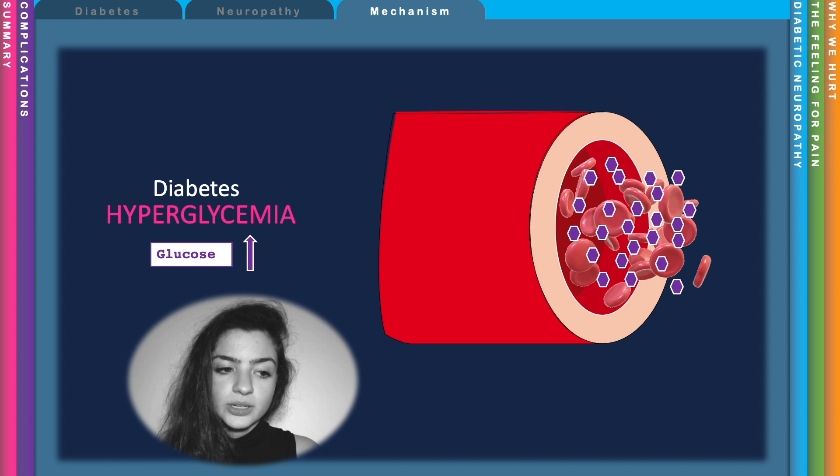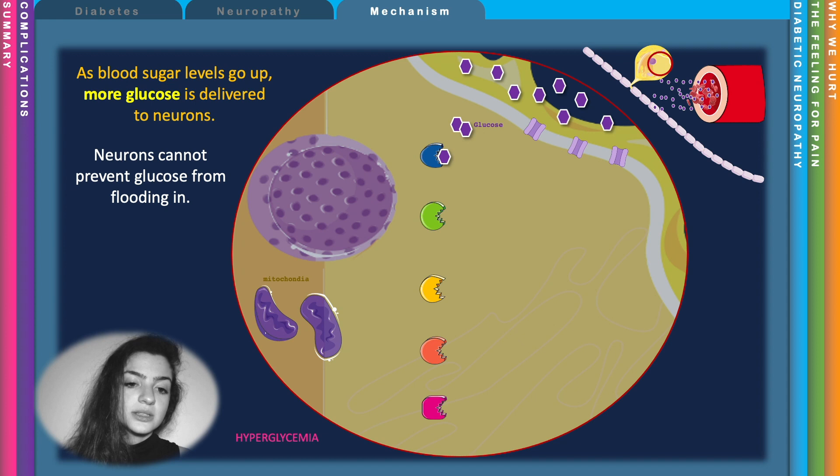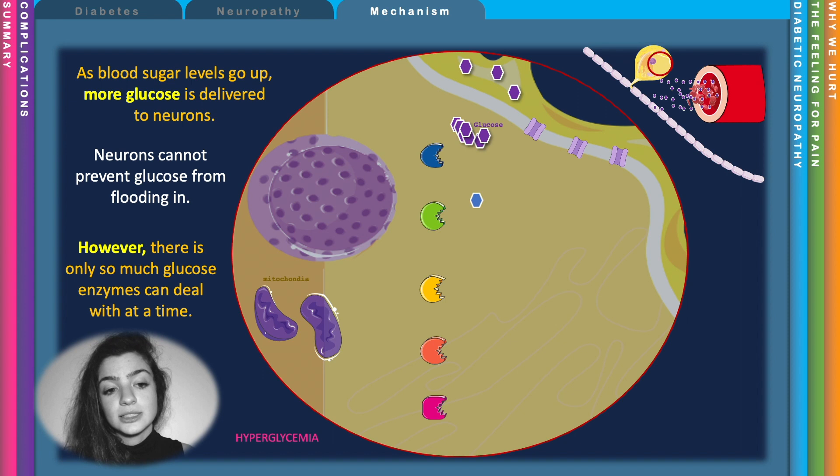In diabetes, we have raised glucose levels in the blood, so more glucose is delivered to neurons — and neurons cannot prevent this glucose from entering. Other cells in the body can, but neurons cannot, which is why they are so sensitive to hyperglycemia. Glucose floods into the neurons, but this metabolic machinery is limited — there is only so much glucose a cell can process at one time.